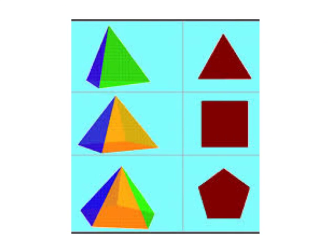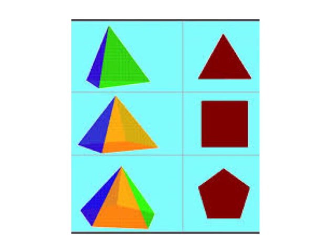Not all pyramids have a rectangular base. This pyramid at the top has a triangular base, so it's called a triangular pyramid. This pyramid here has a square as a base, so it is called a square-based pyramid. And this pyramid here has a pentagon — a five-sided shape — as a base, so it's called a pentagonal pyramid. But what all pyramids have in common is that they have triangular faces on the side, and their triangular faces all meet at a point at the top that we call an apex or a vertex.